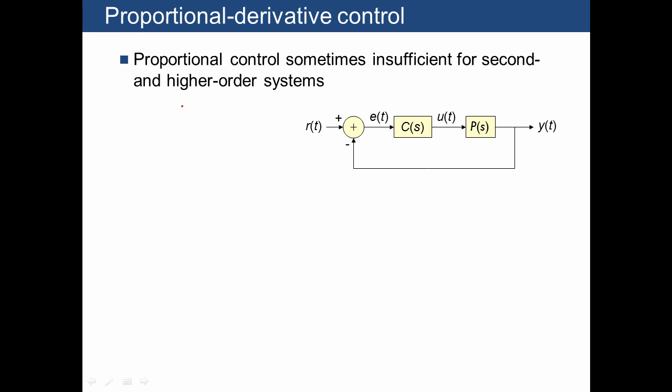We previously showed how proportional control can help stabilize the system. Here we're going to show how sometimes it doesn't work for second or higher order systems.